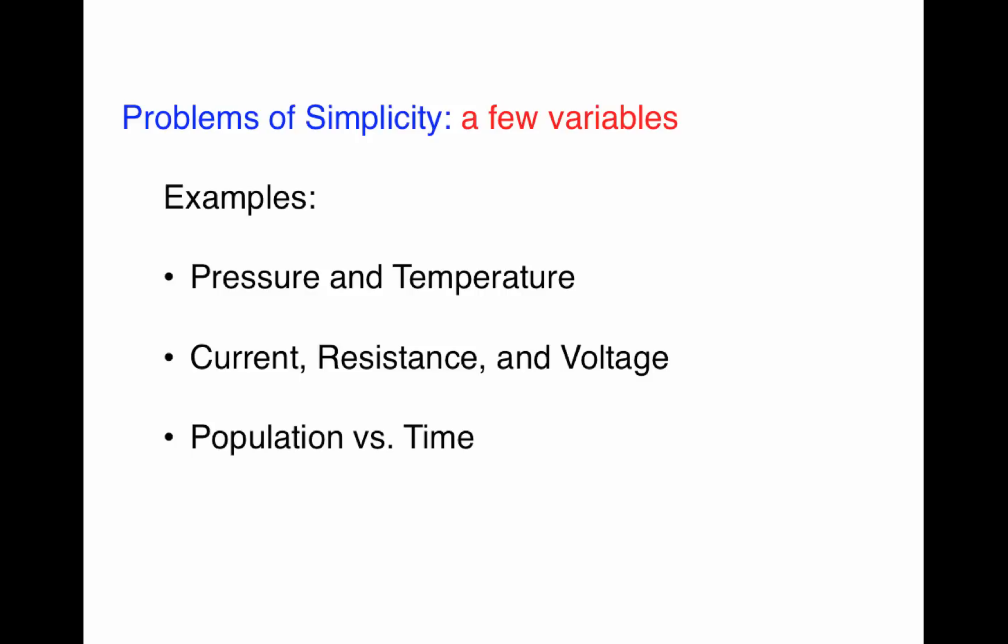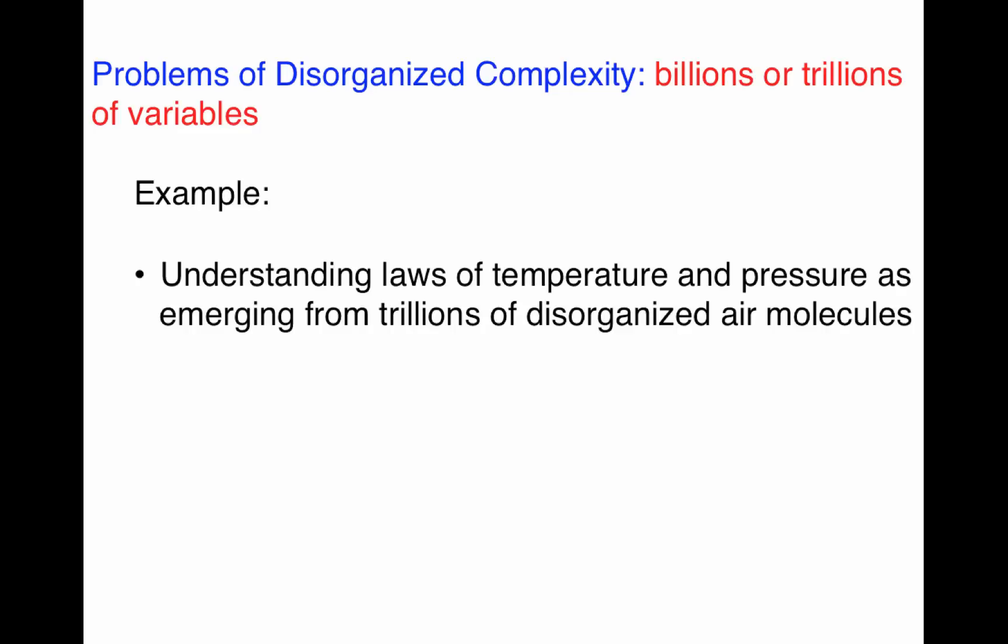Then Weaver goes on to a second category that he calls problems of disorganized complexity. These are problems involving billions or trillions of variables. So one example would be understanding the laws of temperature and pressure as arising from trillions of disorganized air molecules in a room or in the atmosphere. These are understood through taking averages over the large set of variables.